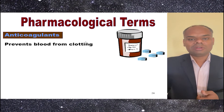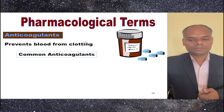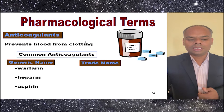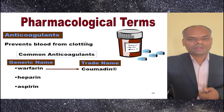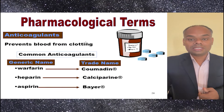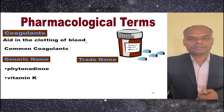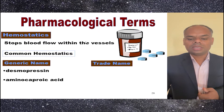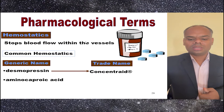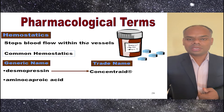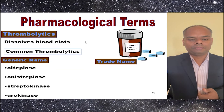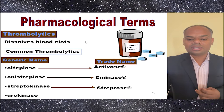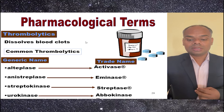Next comes anticoagulants, which help in prevention of blood clotting. Common anticoagulants are Warfarin, trade name Coumadin; Heparin, trade name Calciprine; and Aspirin, trade name Bayer. Phytonadione trade name is Mephyton, and Vitamin K trade name is Konakion. Desmopressin trade name is Concentrex, and Aminocaproic Acid trade name is Amicar. tPA trade name is Activase. Urokinase trade name is Abbokinase, and Streptokinase trade name is Streptase.